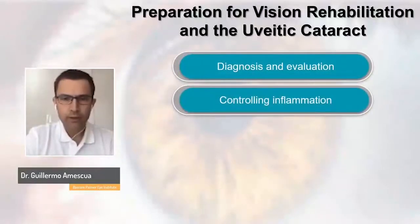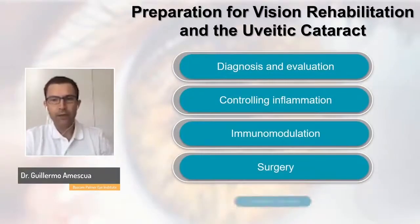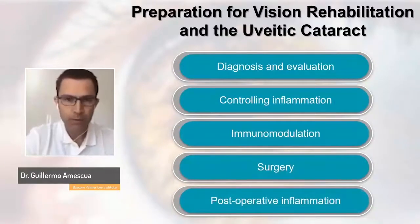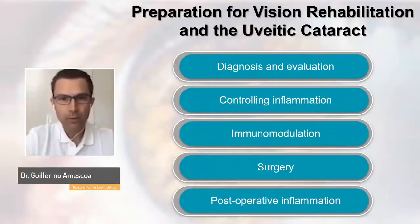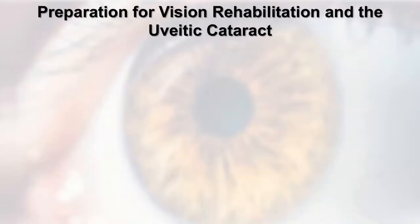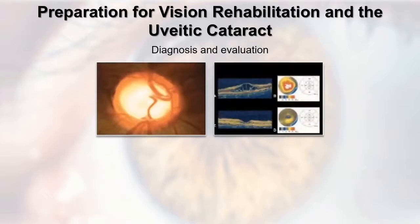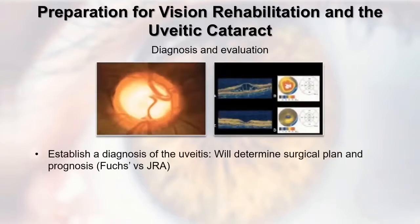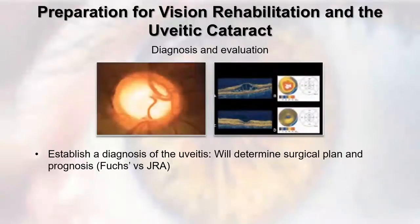We're going to do a journey through evaluation, intraoperative approach, and postoperative approach. It's important to have a protocol and a system for approaching patients with inflammation, whether ocular surface or intraocular. You need to sit down, look at the diagnosis, and establish what it is — because it's very different managing a patient with unilateral inflammation from Fuchs heterochromic iridocyclitis versus a pediatric patient with JRA, juvenile rheumatoid arthritis.